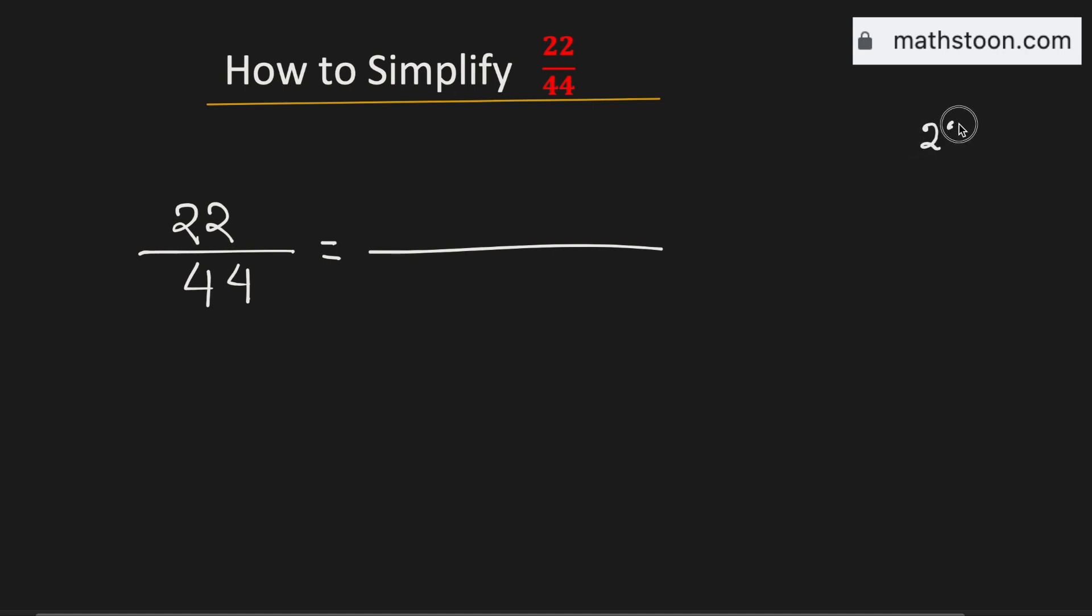Note that 22 is an even number, so we can divide it by 2 and we get 11. And we know that 11 is divisible only by 11 and we get 1 here. So 22 can be written as 2 times 11.